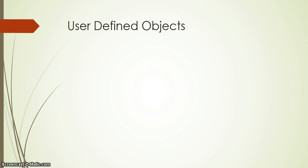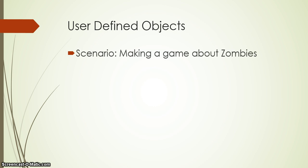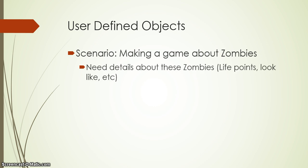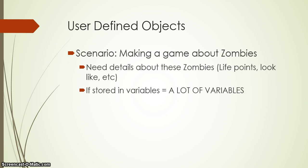Let's take the following scenario. Let's say we want to create a game where we are playing against zombies. If you think about a zombie, we are probably going to need to store information about the zombie — things like the life points, how the zombie looks, the height, the color, and stuff like that. There's a lot of information we'd need to store about the zombie, which means we'd need a lot of variables.